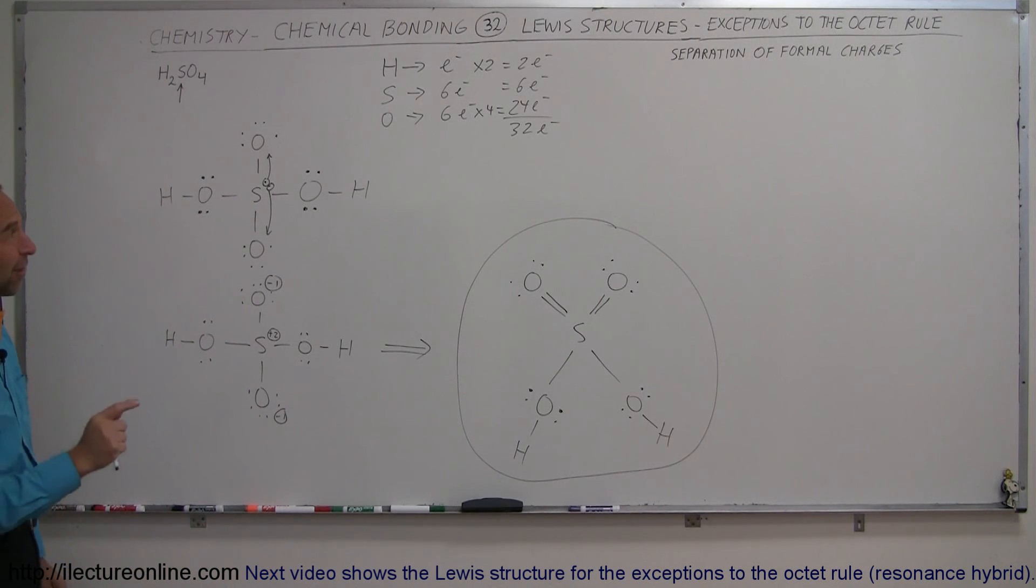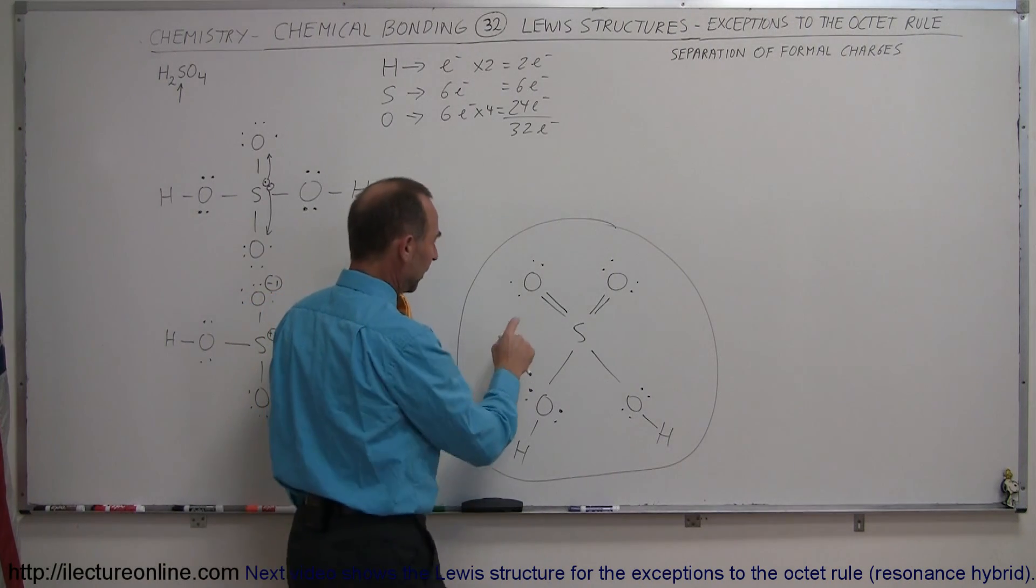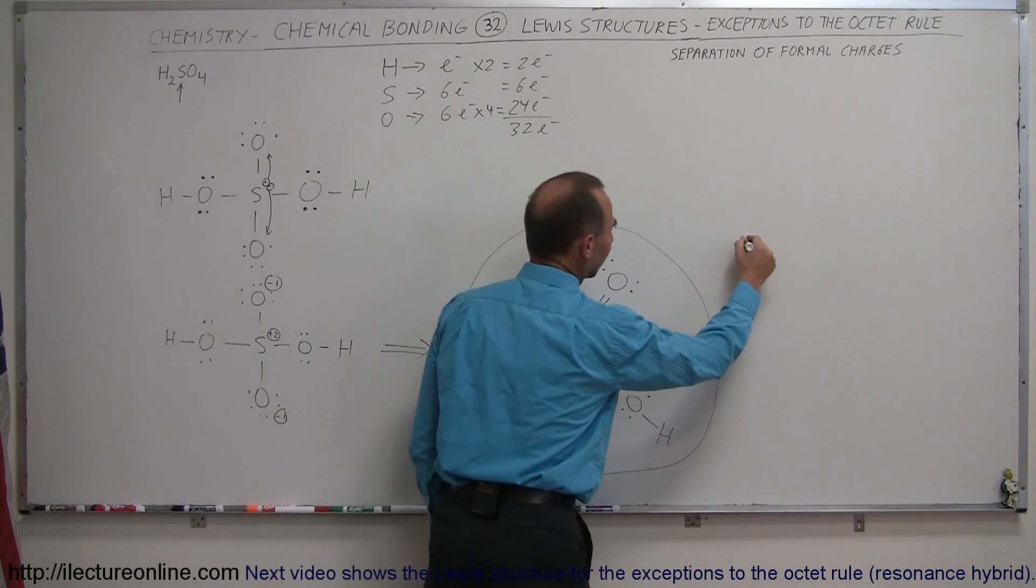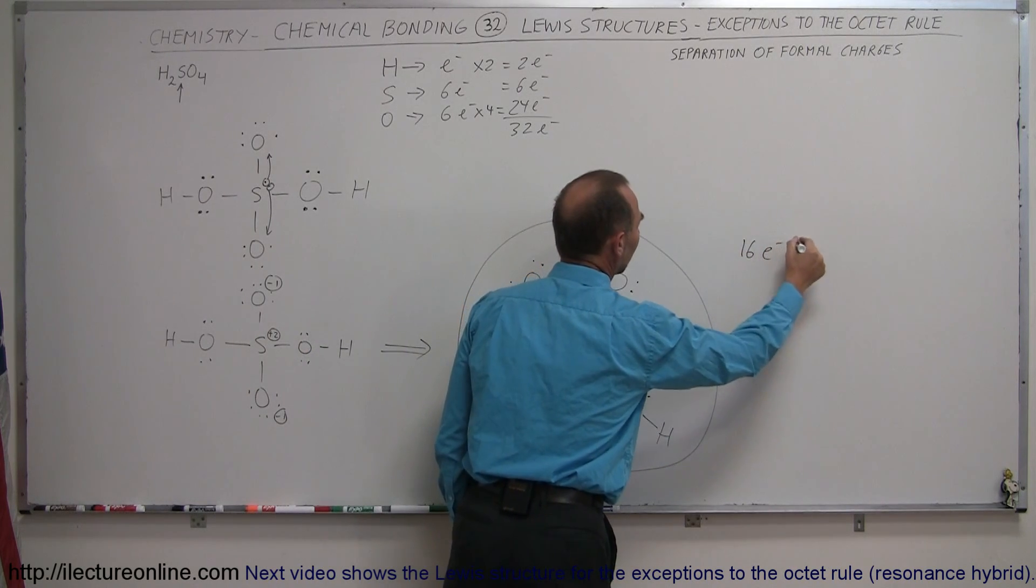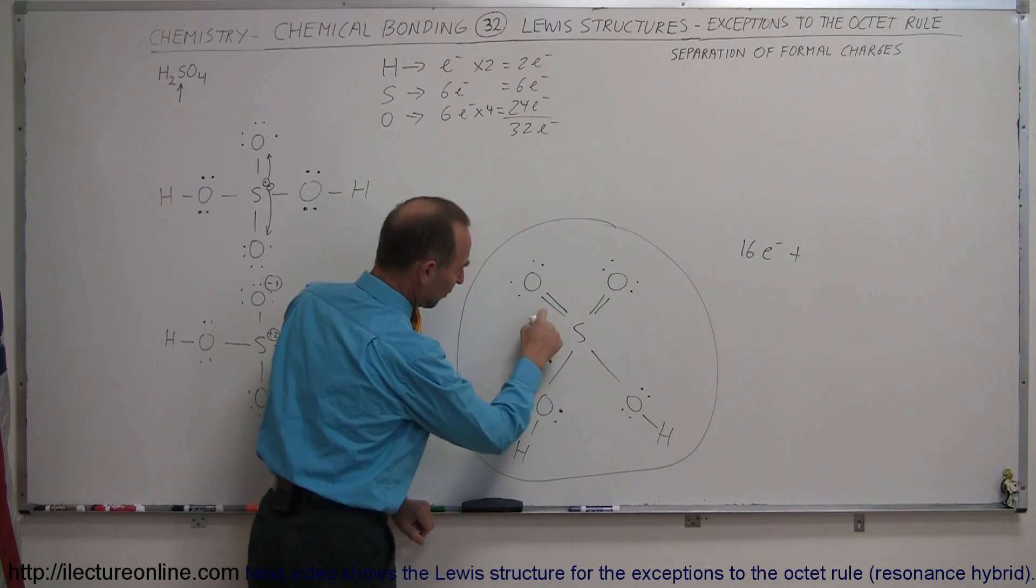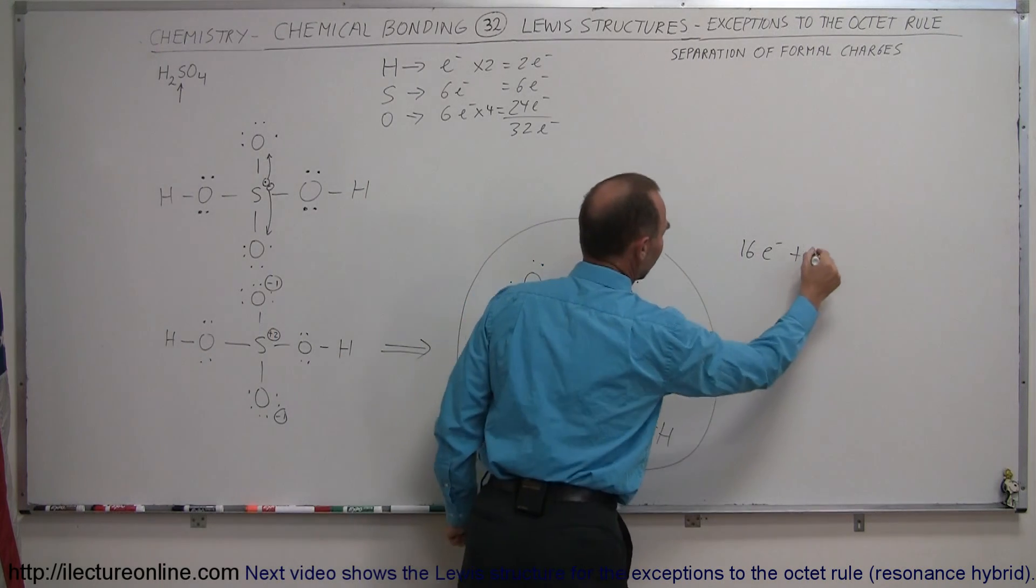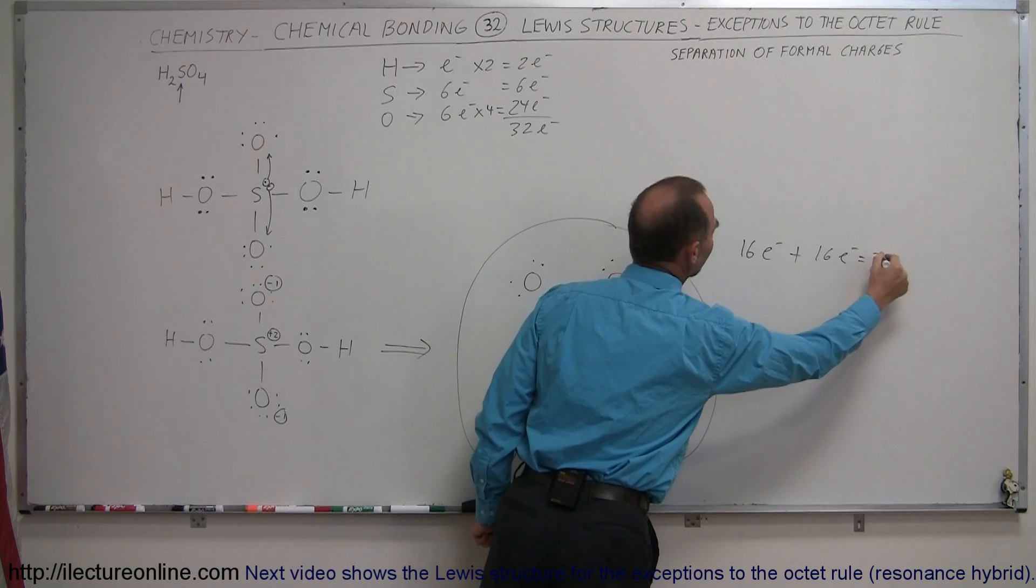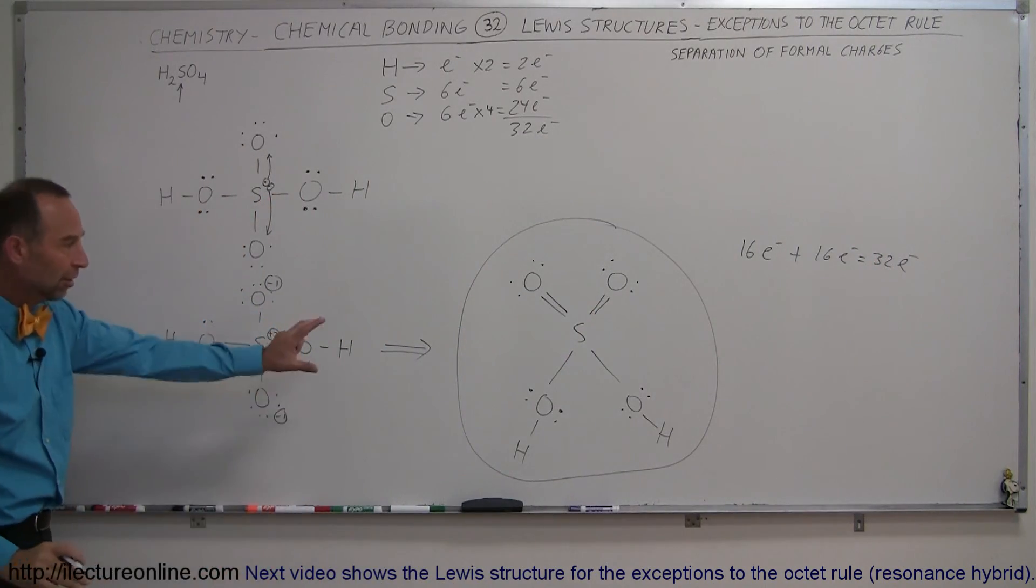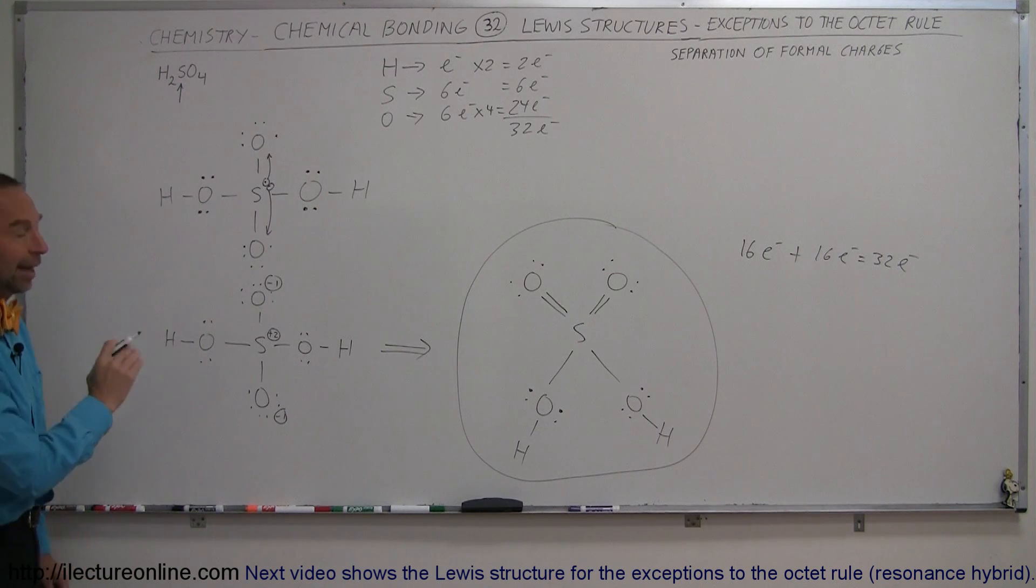Let's see if we satisfy the total number of electrons being used, so let's add them up. We have two, four, six, eight, ten, twelve, fourteen, sixteen valence electrons, plus how many in bonding: two, four, six, eight, ten, twelve, fourteen, sixteen. Sixteen plus sixteen electrons in bonds is thirty-two electrons, and notice that satisfies the total available electrons, so this is a perfectly good scenario, and that's what a sulfuric acid molecule looks like.